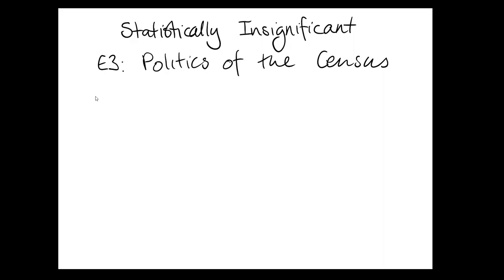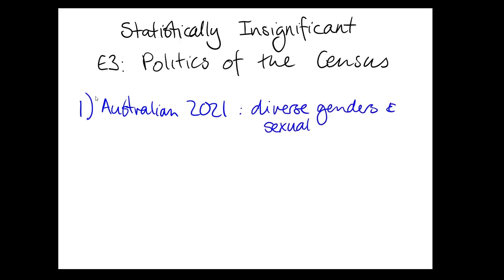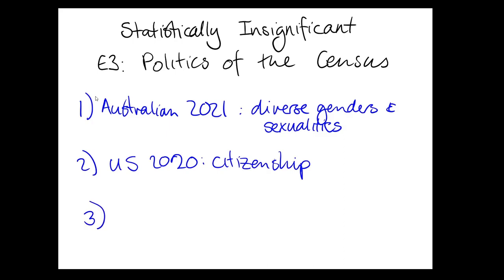We're going to look at three case studies. The first one is the proposed and actual questions for the Australian 2021 census, which happened a few weeks ago, and this is about diverse genders and sexualities. We're also going to look at a proposed question for the U.S. census in 2020 on citizenship. And third, we're going to look at the Australian 1967 referendum, which was the first time that Aboriginal and Torres Strait Islander people were to be counted in the census.